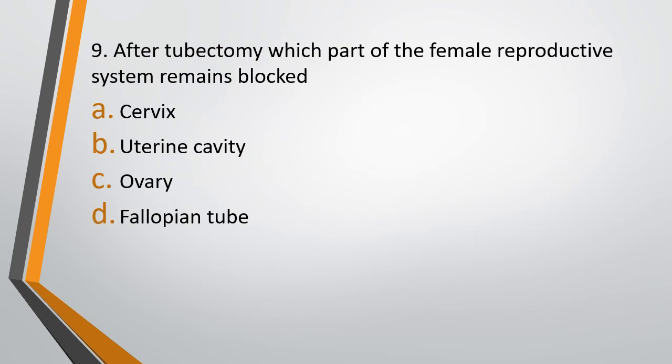Question 9. After tubectomy, which part of the female reproductive system remains blocked? Option A: Cervix. Option B: Uterine cavity. Option C: Ovary. Option D: Fallopian tube. The correct answer is Option D — Fallopian tube. The term itself suggests it — tubectomy means we are cutting the fallopian tube. And the counterpart in the male is called vasectomy, where we cut the vas deferens.